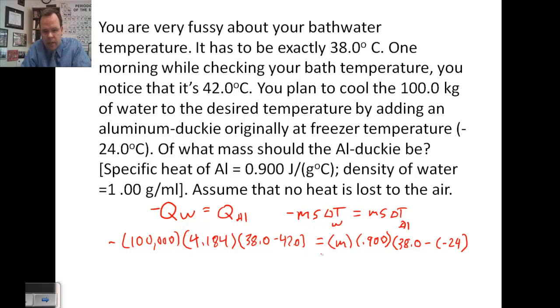On the right side of the equation, we get 55.8 times the mass. The left side of the equation, we get negative 100,000 times 4.184 times 38 minus 42, which comes out to 1,673,600. Let's divide by 55.8.